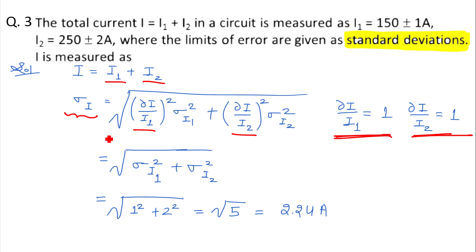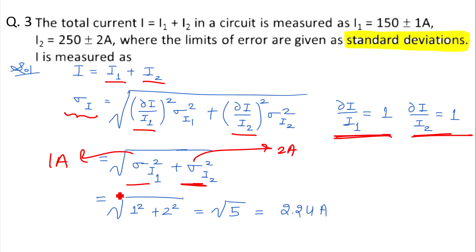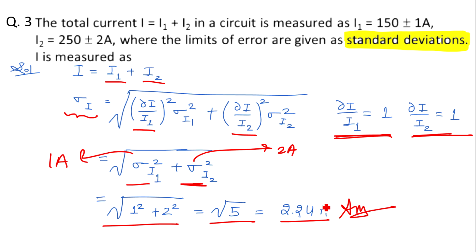When we differentiate with respect to i1 and i2, we get that sigma_i = under root of (σi1² + σi2²). We know that σi1 is the standard deviation in i1 and σi2 is the standard deviation in i2. Given that σi1 = 1 ampere and σi2 = 2 ampere, we substitute: under root of (1² + 2²) = under root of 5 = 2.24.